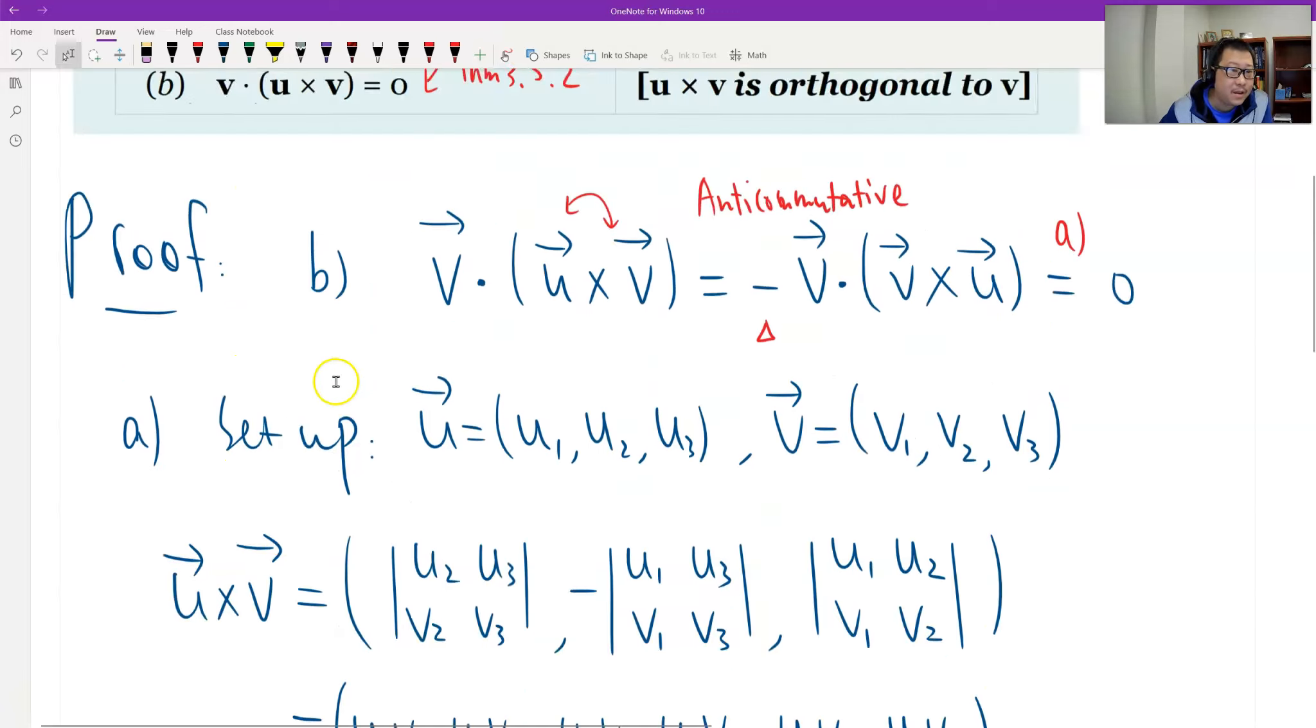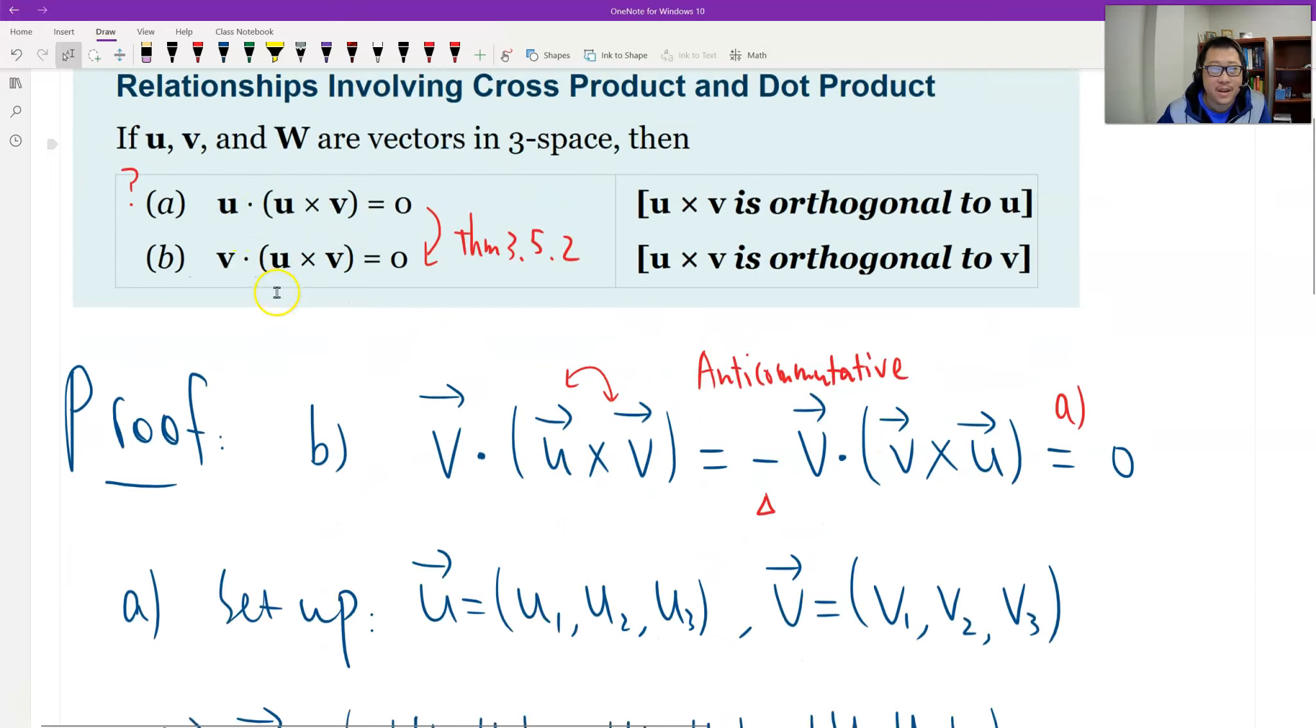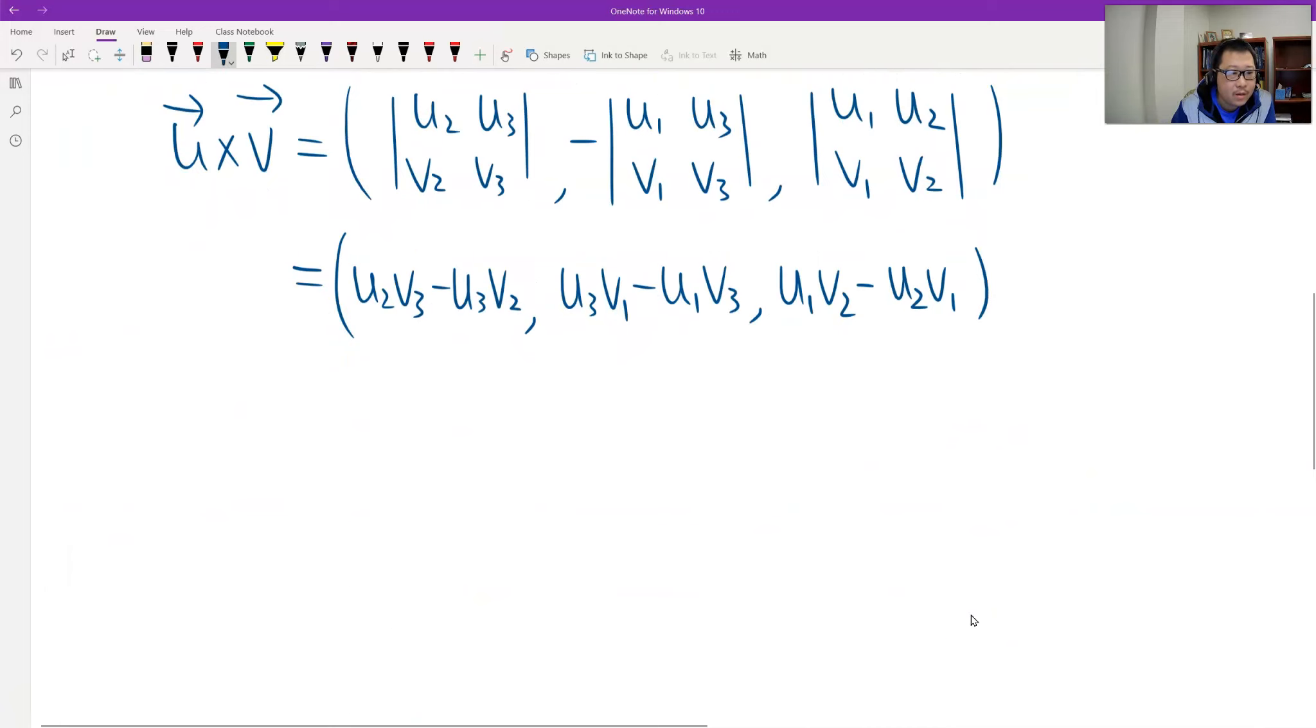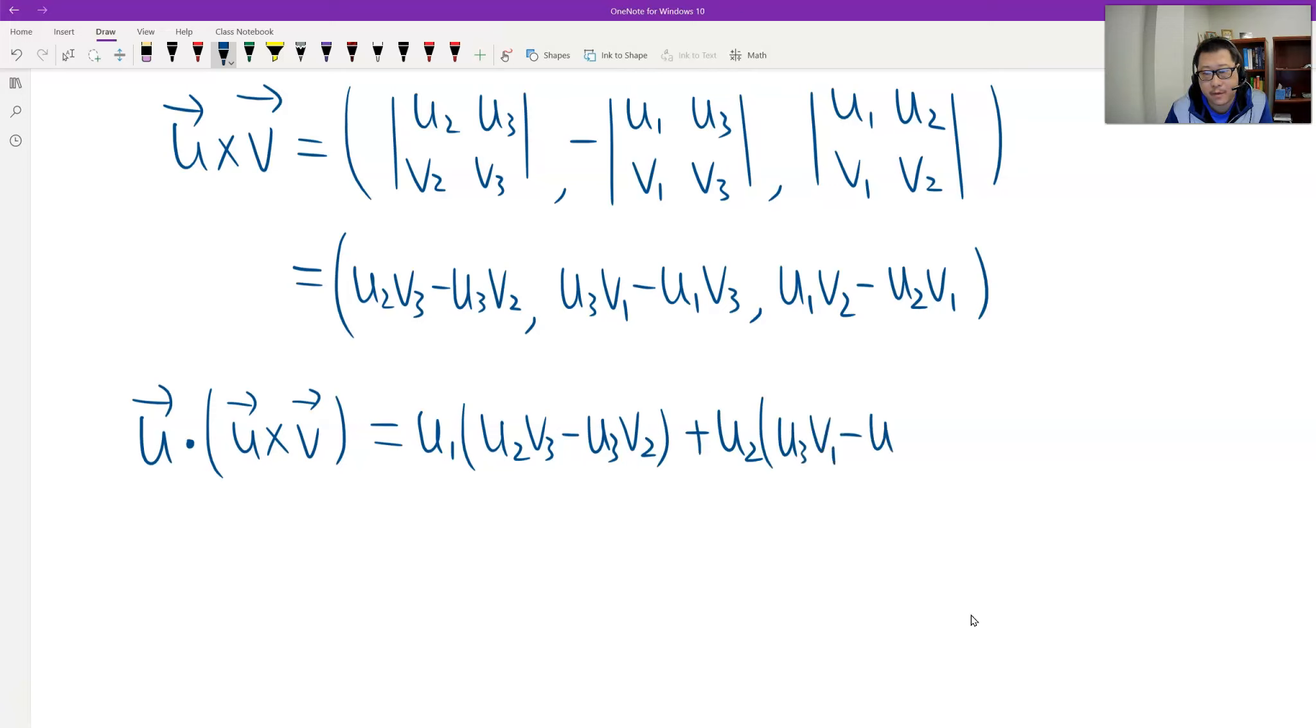And then, we need to use this dotted with vector u. Now, I think it's easy to get. Now, u, like the dot, this cross product. The dot product is the sum of product. So u1 times the first term, which is u1 times (u2v3 - u3v2), plus u2 times the second term, plus u3 times the third term (u1v2 - u2v1).